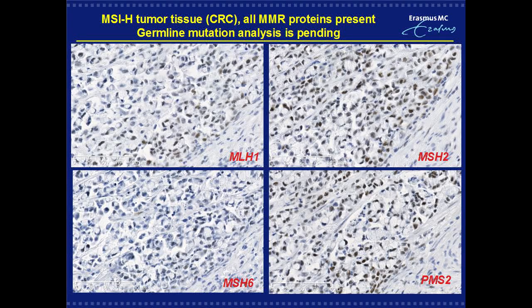First, 5 cases of colorectal cancer showed discordant results of microsatellite instability analysis in combination with immunohistochemical staining for mismatch repair proteins, including one case with microsatellite-instable colorectal cancer without absent mismatch repair protein staining, as shown here. Germline mutation analysis in this patient is pending.